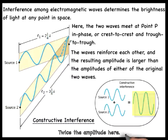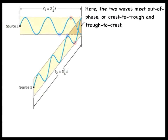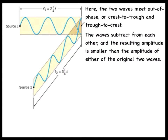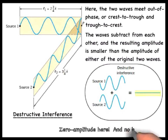In this case, the resulting amplitude is twice that of either of the individual waves, and the brightness of the resulting light wave is also greater than the brightness of either wave alone. Now consider the case where the two waves meet at point P out of phase. This means they meet crest to trough and trough to crest. Again, by the principle of linear superposition, the wave amplitudes subtract from each other and the resulting amplitude is smaller than the amplitude of either of the individual waves. This is known as destructive interference. In this case, the resulting amplitude would be zero as the two amplitudes cancel each other out. There would be zero brightness at point P.